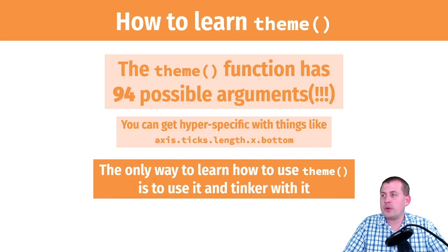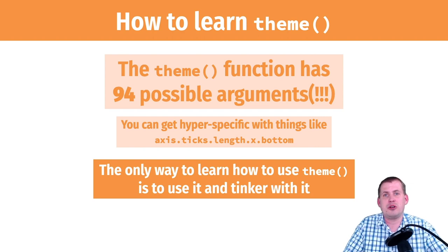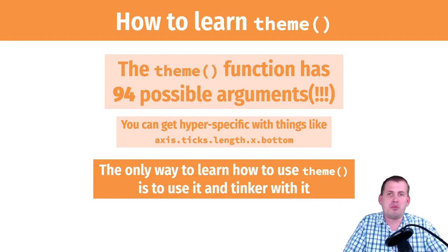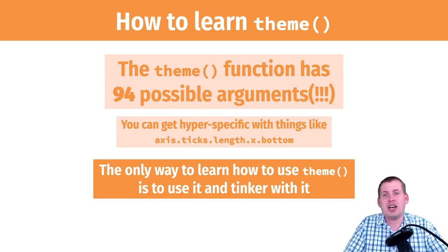The way you learn this is you just have to play with it. There's no possible way for me to teach you all of this stuff. There are 94 possible arguments in the theme function—it's one of the functions with the most arguments in the whole R ecosystem. Most functions have like two or three arguments, and there are 94 here.